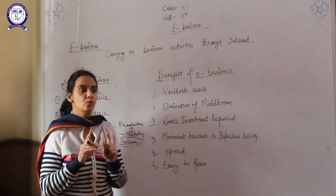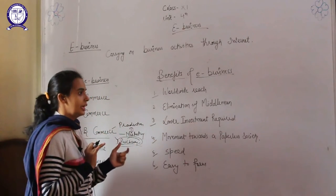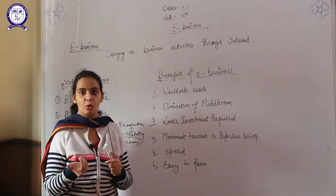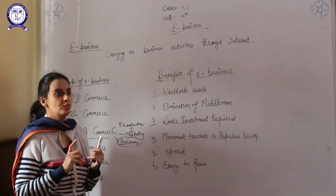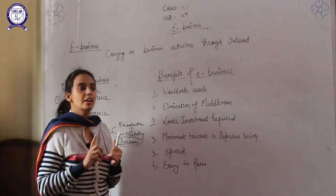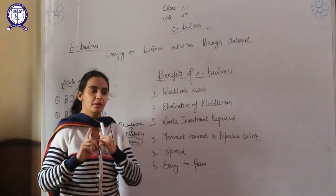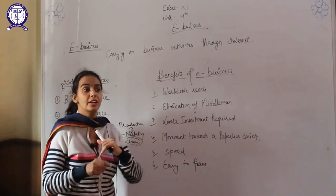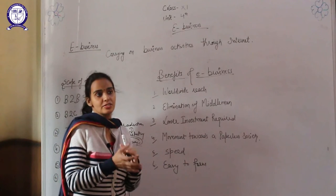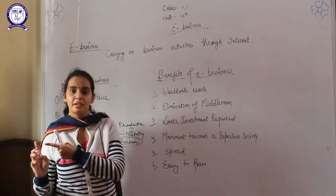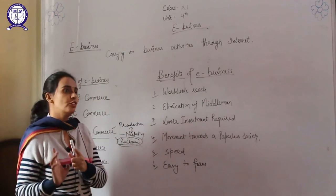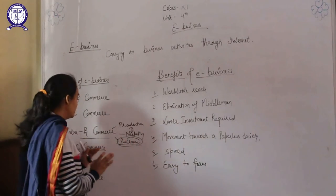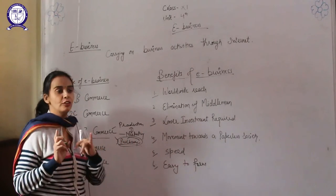Now C2C — consumer-to-consumer commerce. There is no involvement of a business firm; two consumers come together on the net and deal about the product, for example on Quikr or OLX. Suppose one customer wants to sell their product, so they give an advertisement on OLX or Quikr, and another interested consumer can contact that customer to buy the product. There is no involvement of any business firm — consumers are on both sides.